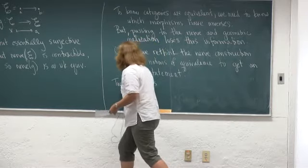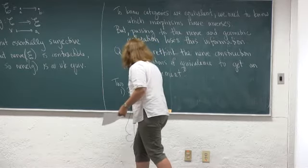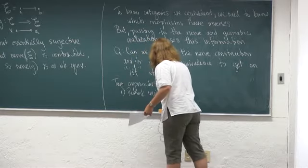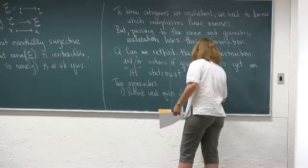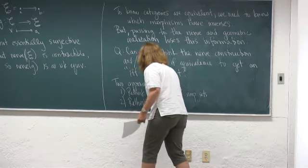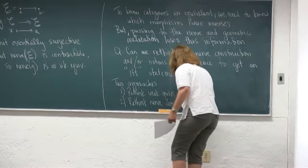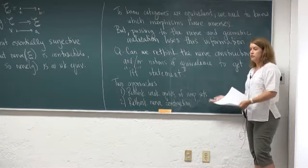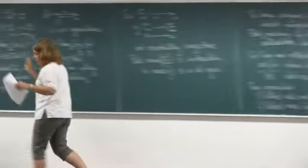We're going to approach this two ways: first, by rethinking what we mean by weak equivalences of simplicial sets; second, by rethinking the nerve construction. Then we can compare what we get. In approach one, we're not going to take geometric realization because that's part of the problem. In approach two, we'll come up with a fancier nerve construction and still do something like geometric realization, but having picked up more information.